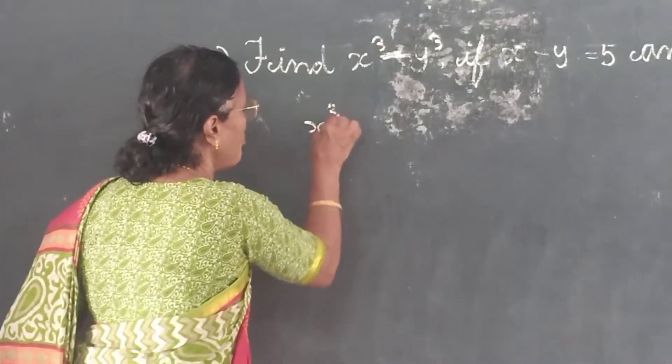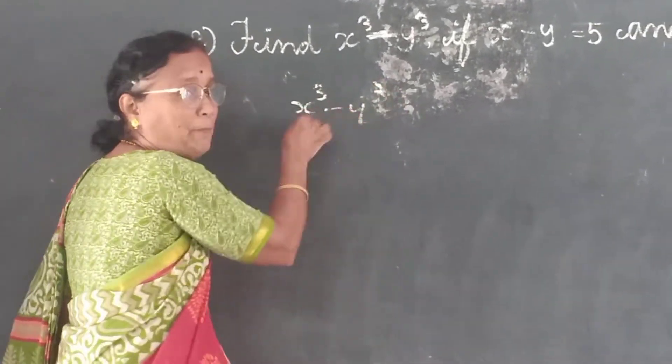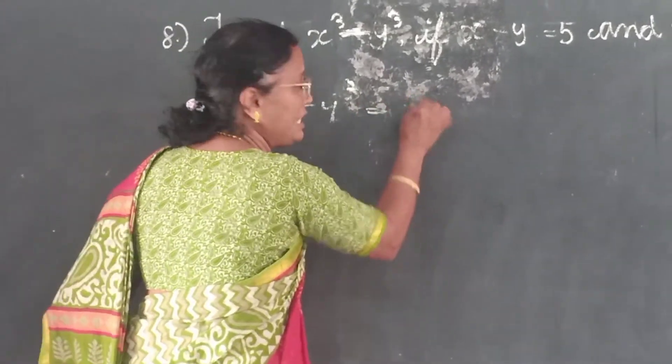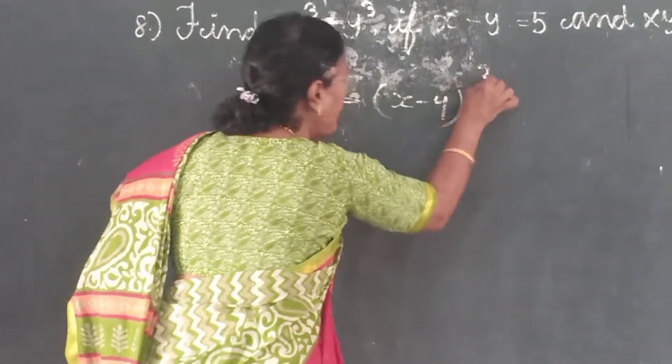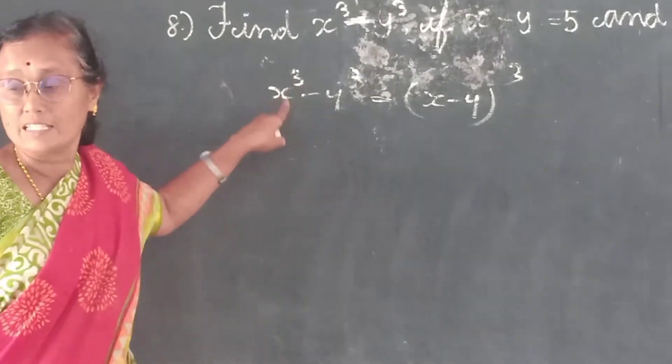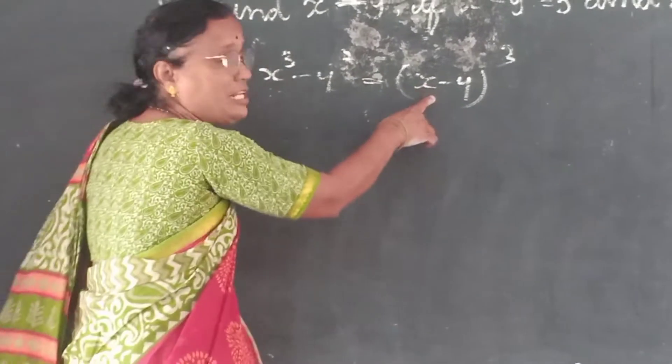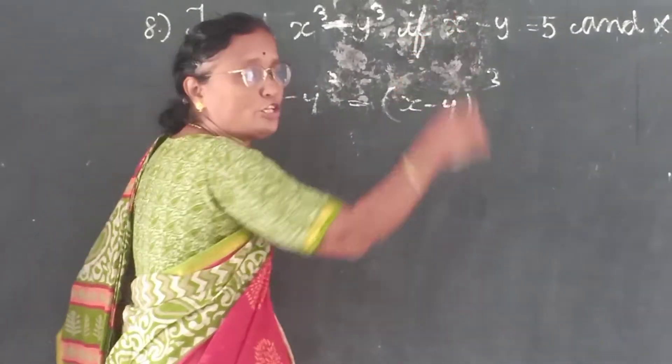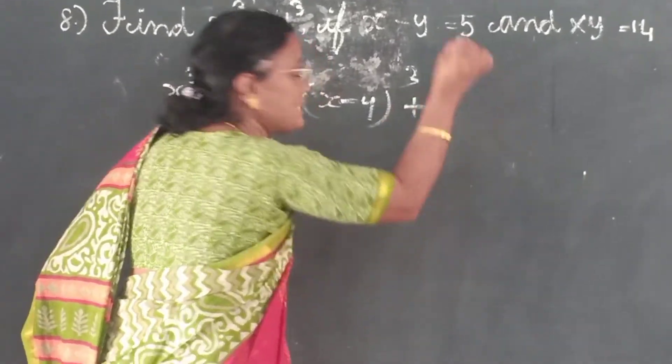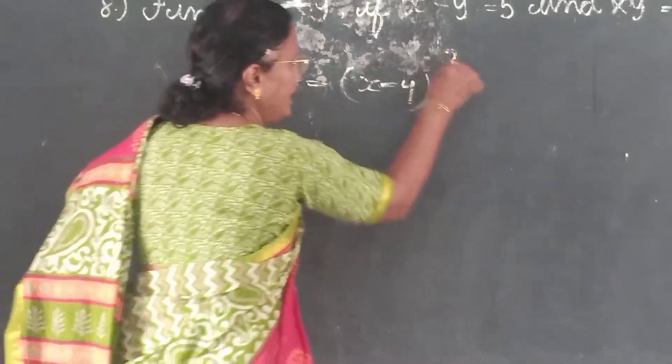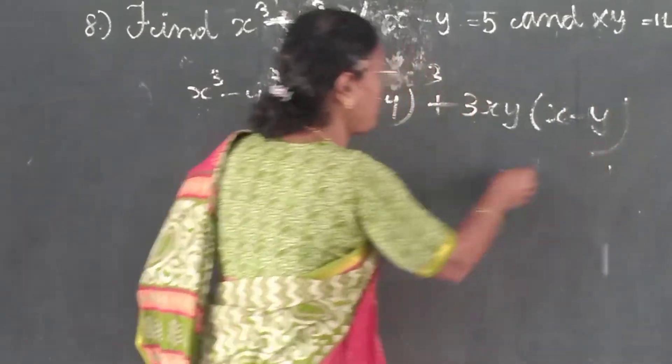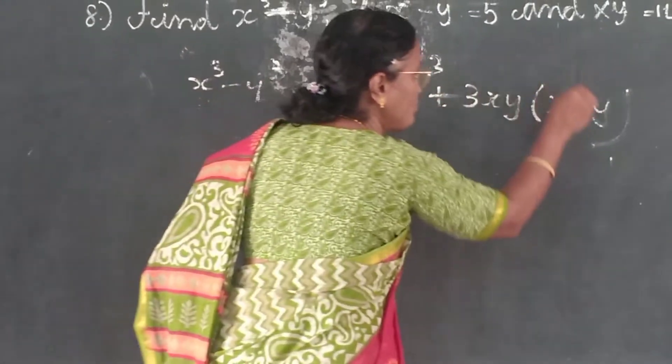So x³ minus y³. Since it is minus, that means x³ minus y³ equals (x minus y)³ plus 3xy(x minus y). Here minus, here what symbol you should have? Plus. Alternate.